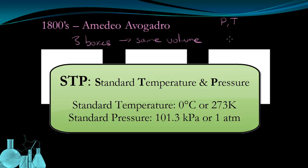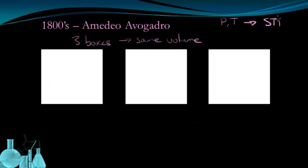We have an established set of conditions to represent a standard temperature and pressure. If we define the conditions of an experiment as being at STP, or Standard Temperature and Pressure, anyone anywhere will know that the temperature is 0 degrees Celsius, or 273 Kelvin, and the pressure is 101.3 kilopascals, or 1 atmosphere of pressure. So for our three boxes, let's say that they are at STP.